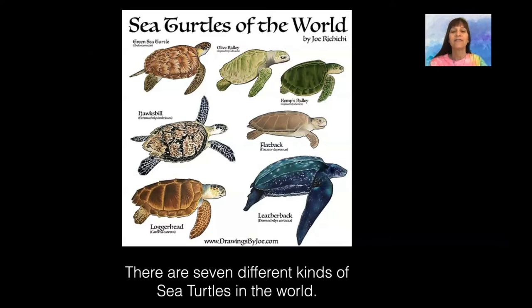There are seven different kinds of sea turtles in the world. There are green sea turtles, olive ridley turtles, kemp's ridley, hawksbill, flatback, loggerhead, and leatherback.